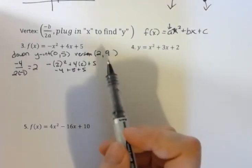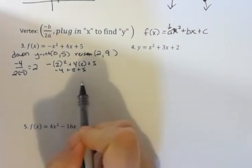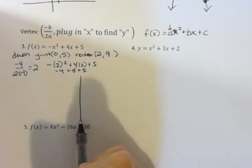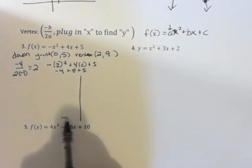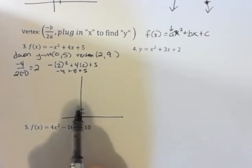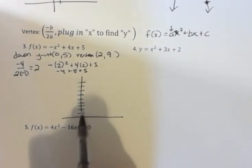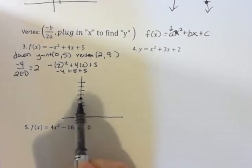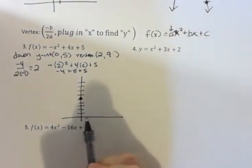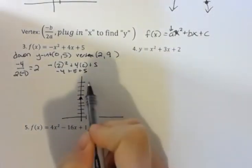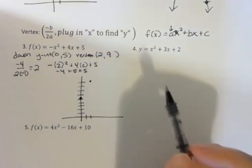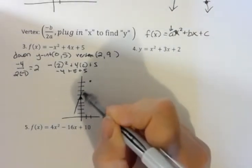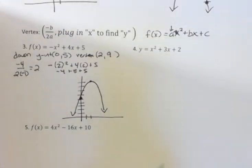And so if I was going to draw that graph, marking the axes, my y-intercept at 5, and then (2, 9) is my vertex. It opens down. And so I would draw this for my rough sketch.